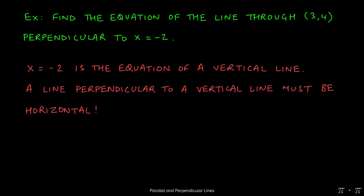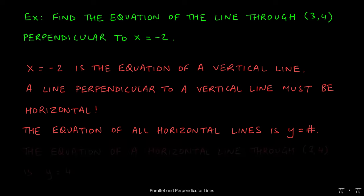Hopefully you also remember that the equation of a horizontal line is always y equals a number, and that number is the y coordinate that the line passes through. So in this case, because the line passes through 3, 4 and the y coordinate here is the number 4, the equation of the line that's perpendicular to x equals negative 2 is just y equals 4.